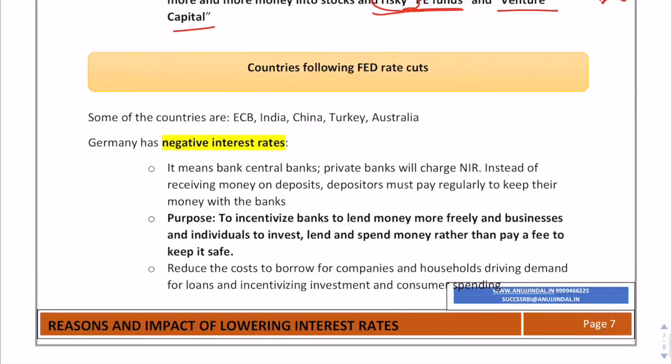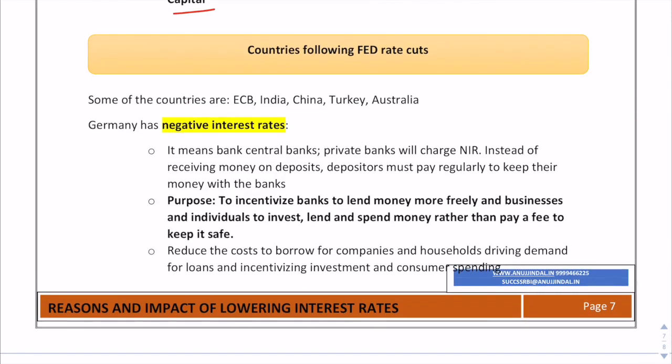Some countries like the ECB, India, China, Turkey, and Australia are following the Fed rate cuts. Some countries have gone even further with negative interest rates — for example, Germany, where rates have fallen from minus 0.04% to minus 0.06%.